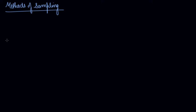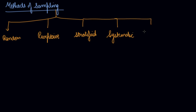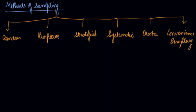In this video, we will be studying about the methods of sampling. There are six methods of sampling: number one is the random method, number two is purposive sampling, number three is stratified sampling, number four is systematic sampling, number five is quota sampling, and the sixth one is convenience sampling. In this video, we will be studying about the first three methods of sampling.